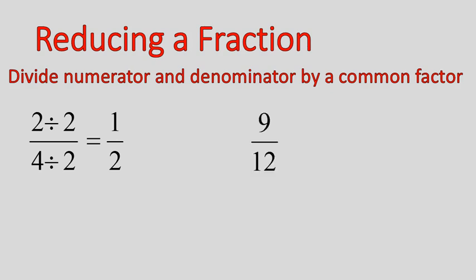Here's another example. 9 over 12. They have a factor of 3. So I can divide the top and bottom evenly by 3, and that will give me a new fraction that is equivalent, but written in lower terms.